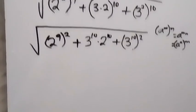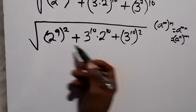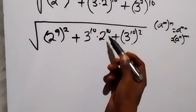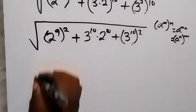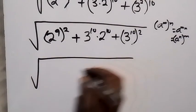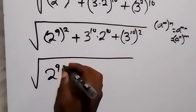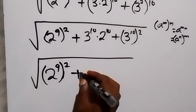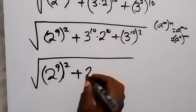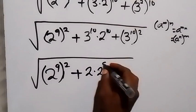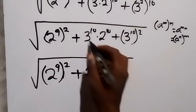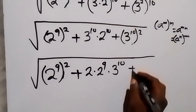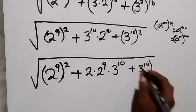From the next step, we bring the power of 2 together, and we can separate 2 raise to power 9 out so that it becomes 2 times 2 raise to power 9. Rearranging, we have root of 2 raise to power 9, raise to power 2, plus 2 raise to power 10 — written as 2 times 2 raise to power 9 — multiplied by 3 raise to power 10, plus 3 raise to power 10, raise to power 2.